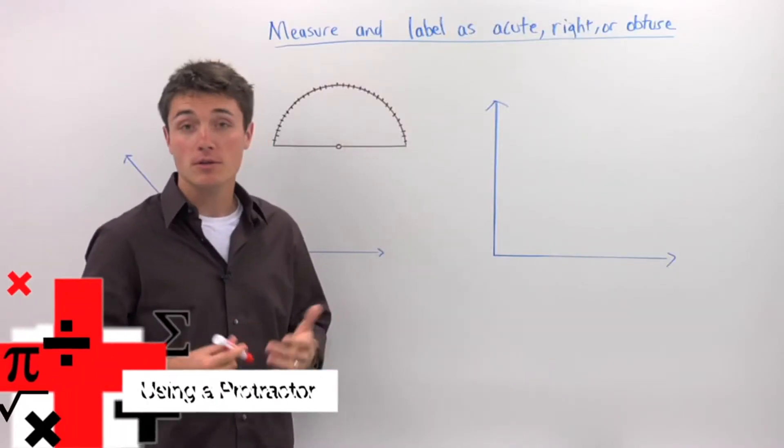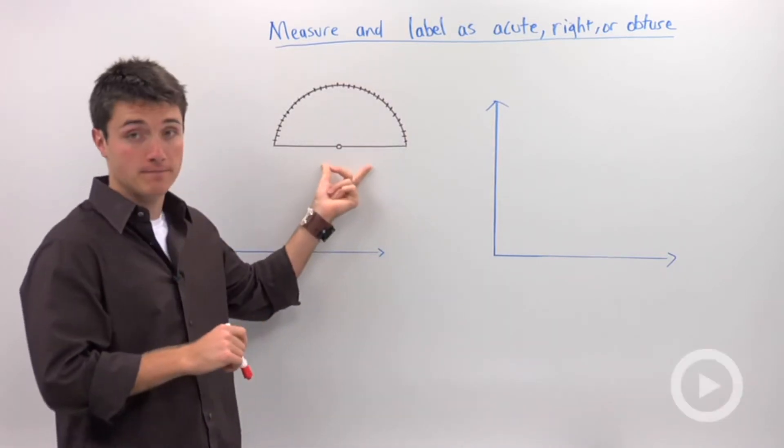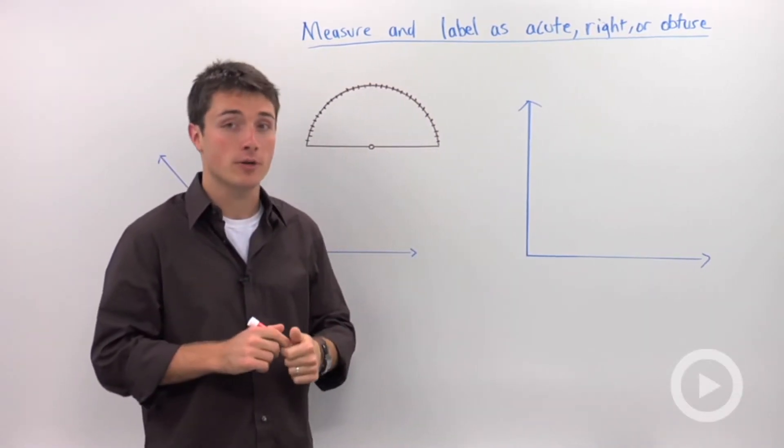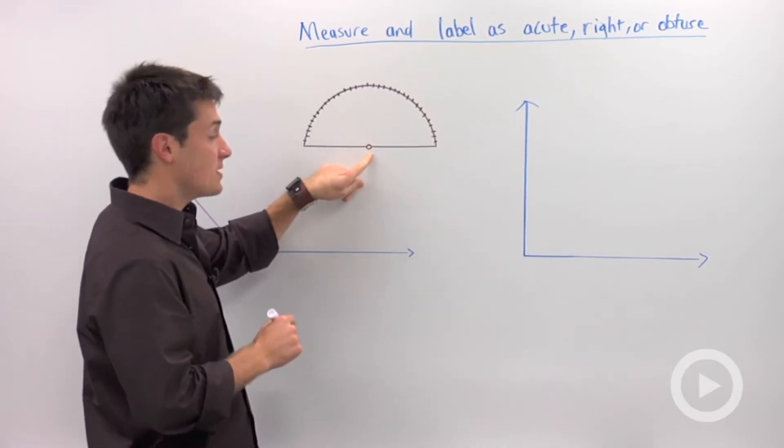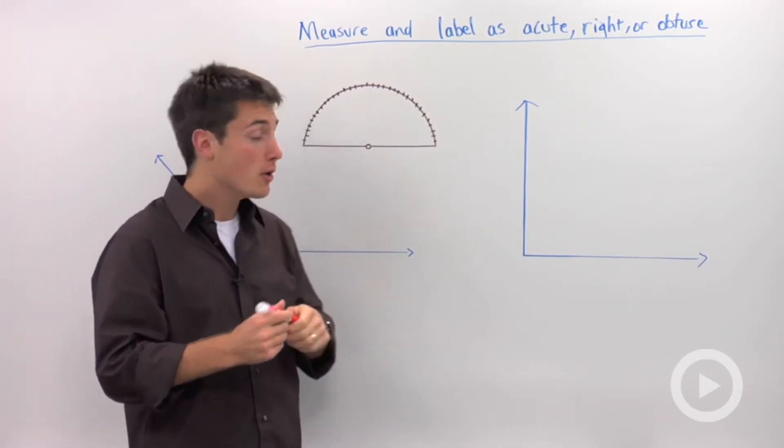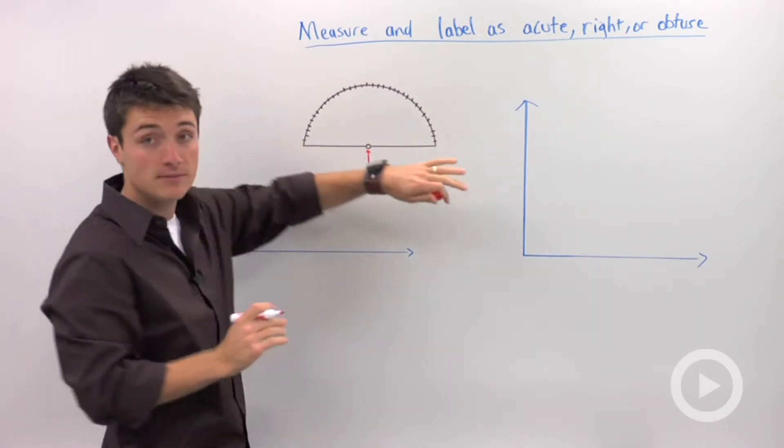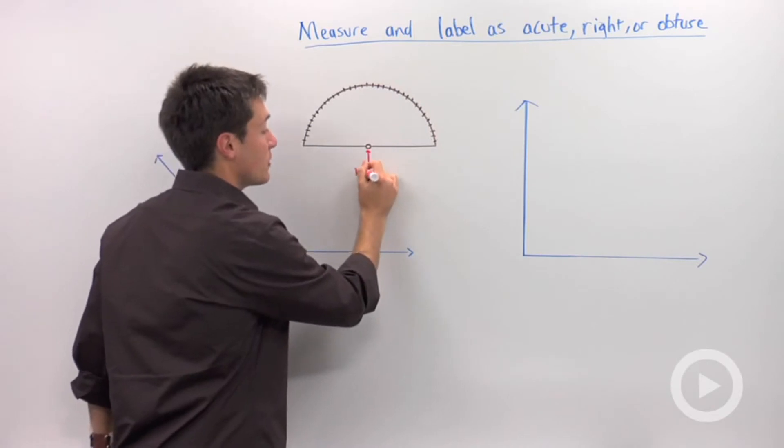In geometry, it's important to know how to measure an angle. To do that, you use a protractor. The key thing about using a protractor is using this alignment. Now every protractor is a little bit different, but they're all going to have something at the middle of the base.